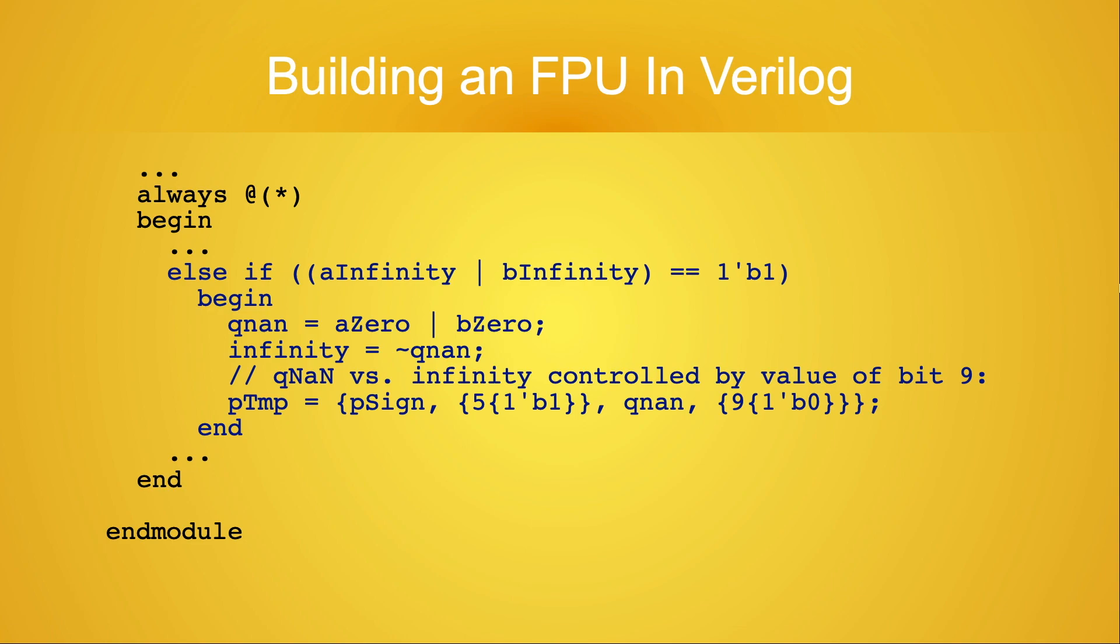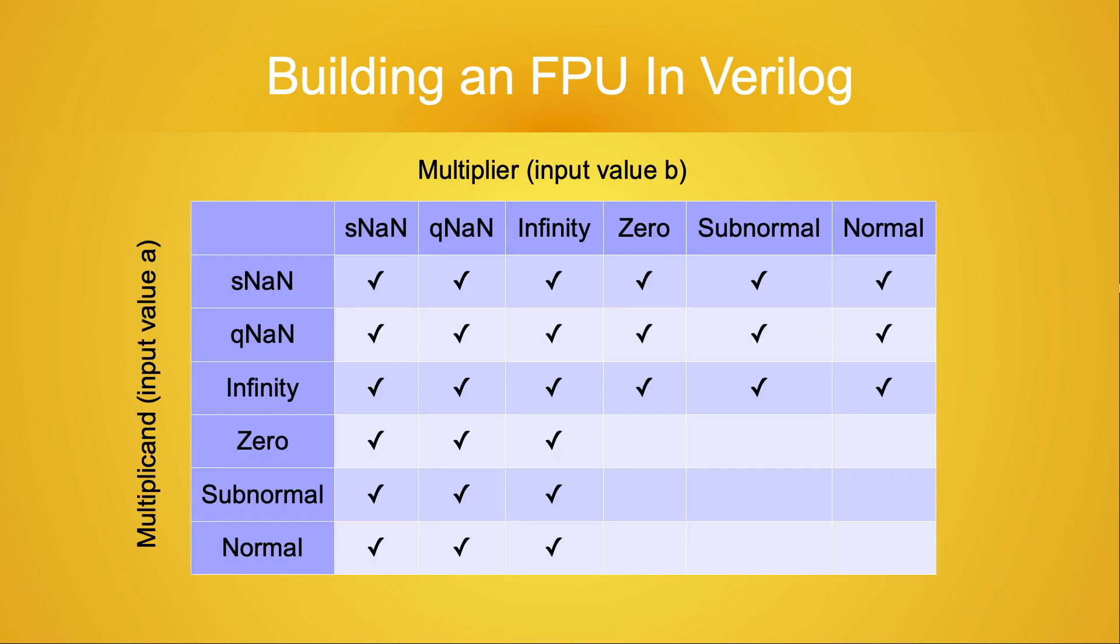If you choose not to encode the multiplication operation symbol into the NaN, there's a simpler way to write the code. Here I used the value of the qNaN flag to control bit 9 of the result and to determine what value is stored in the infinity flag. With the infinity case out of the way, our checklist is now down to this.